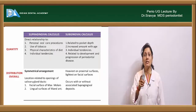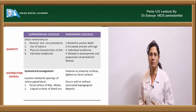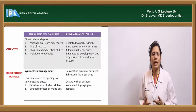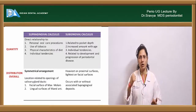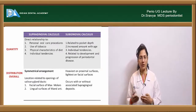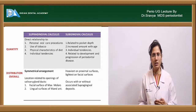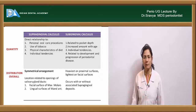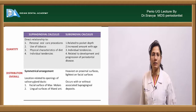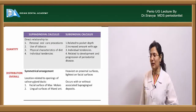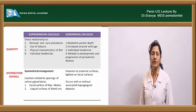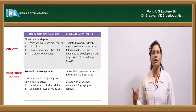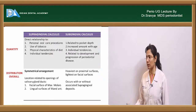Subgingival calculus quantity is mainly dependent on pocket depth — greater depth means more subgingival calculus. It also increases with age, likely due to poorer oral hygiene maintenance, leading to more plaque accumulation, more periodontal pockets, and thus more subgingival calculus. Individual tendencies also play a role, as some are more prone to periodontal disease and subgingival calculus formation. The more the disease progresses, the deeper the pockets and the more calculus accumulates.